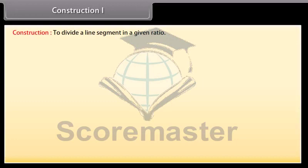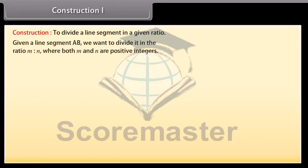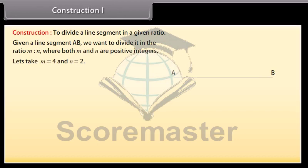To divide a line segment in a given ratio: given a line segment AB, we want to divide it in the ratio M is to N, where both M and N are positive integers. Let's take M as 4 and N as 2.